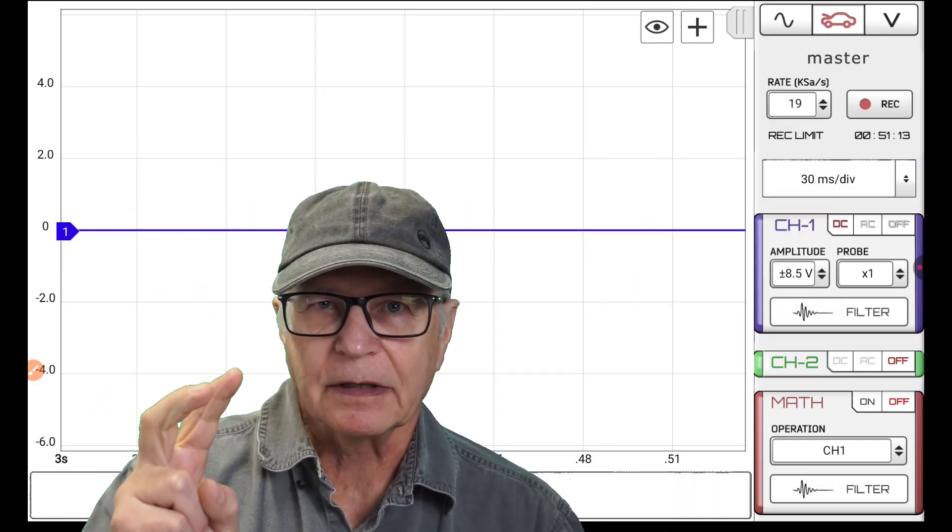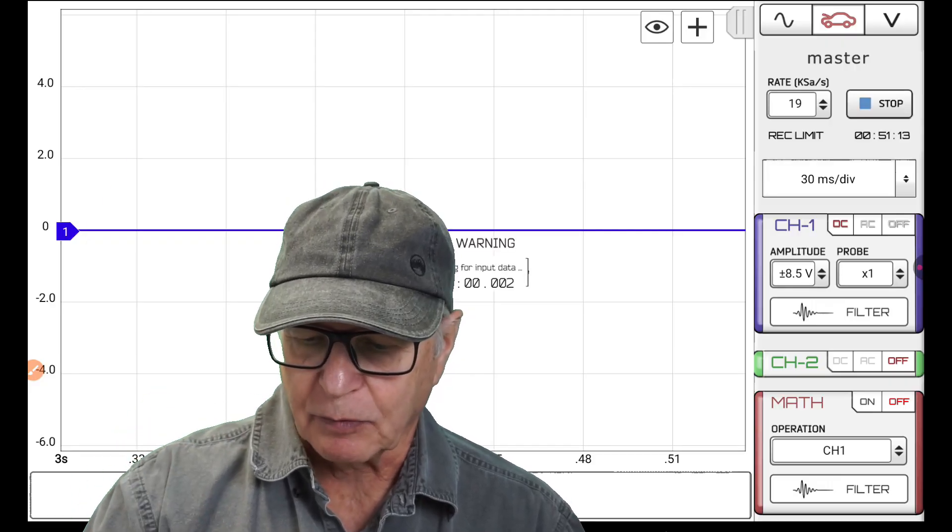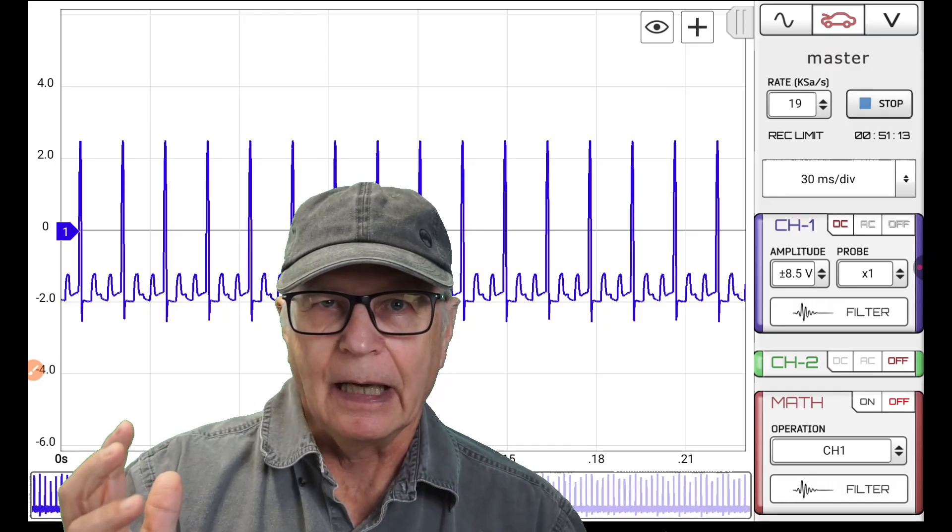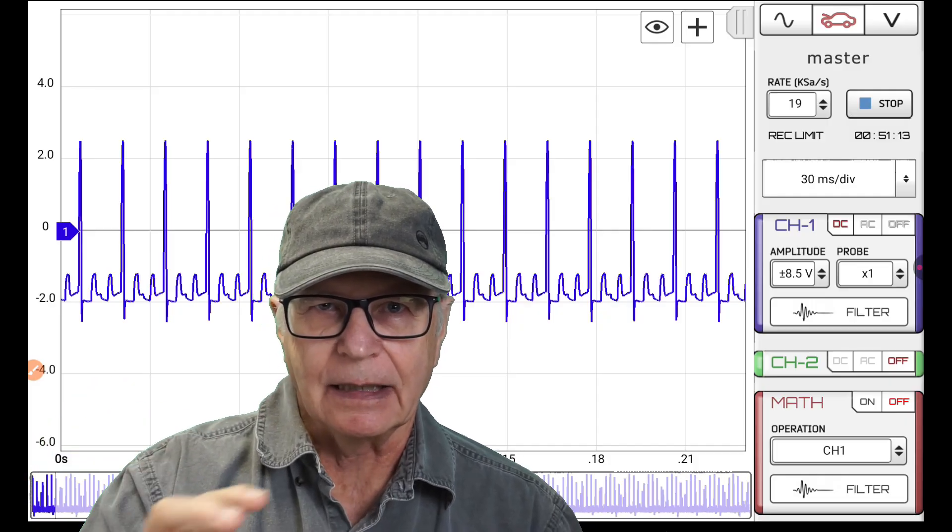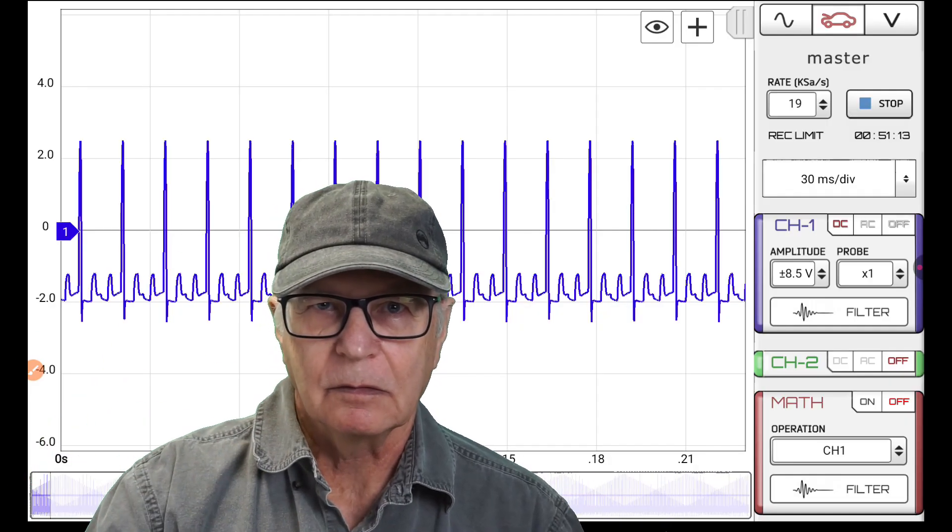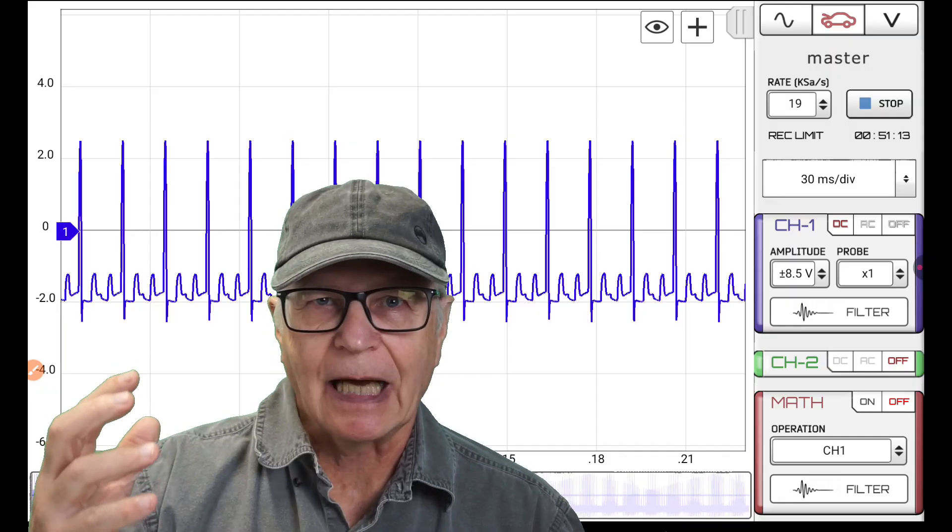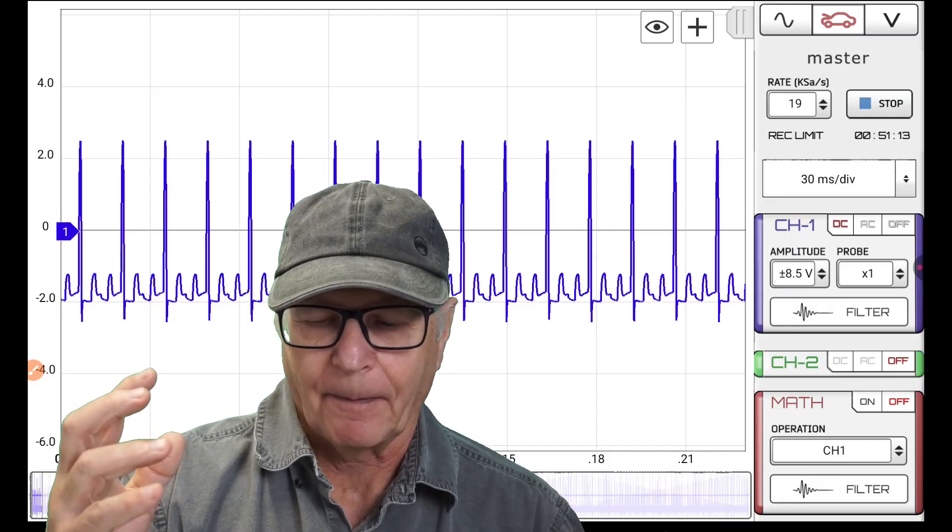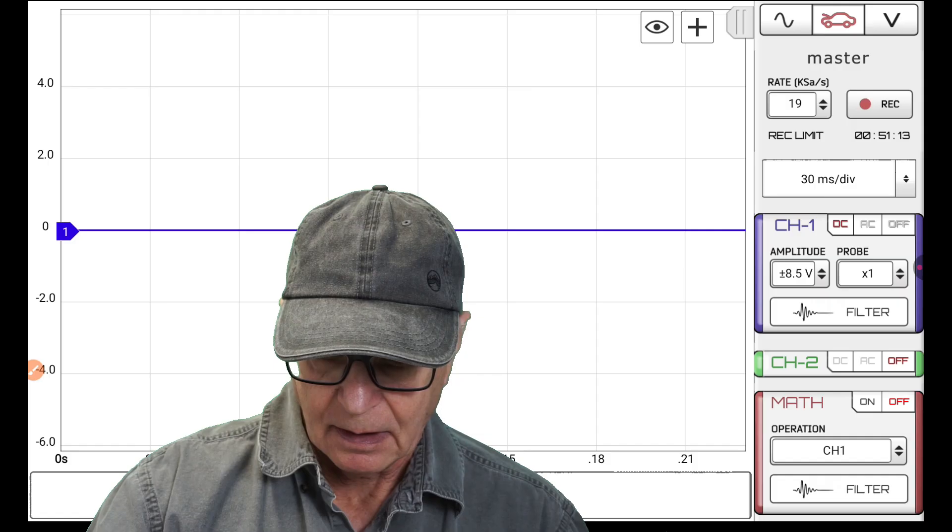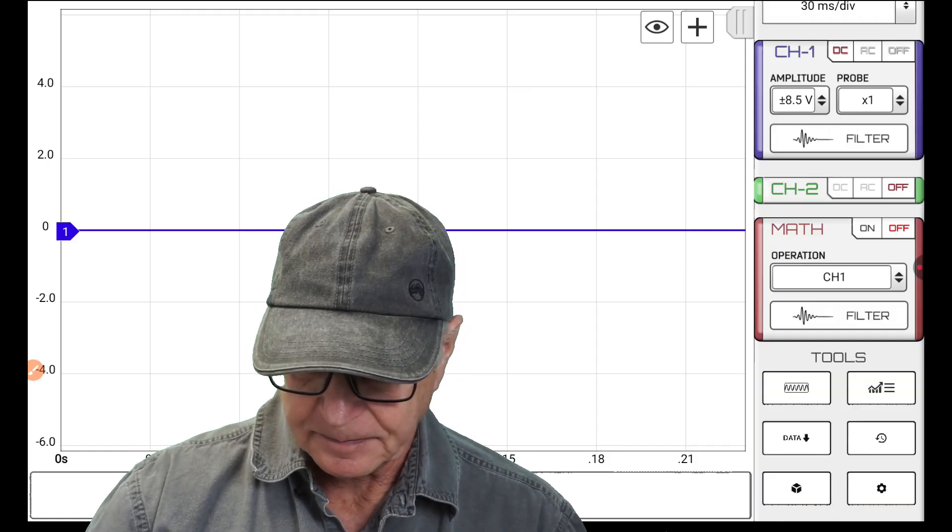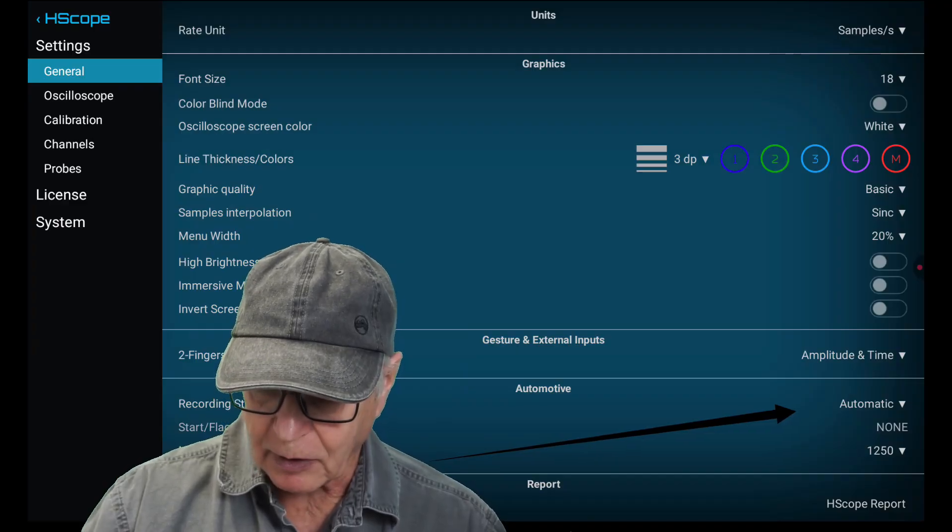There are two start methods to this. Right now, we're in automatic start. I'm going to press record and H-scope automotive module detected that there was a waveform on the BNC and start to capture right away automatically. We'll stop that. Go into the settings. So right here in record start, I'm on automatic.